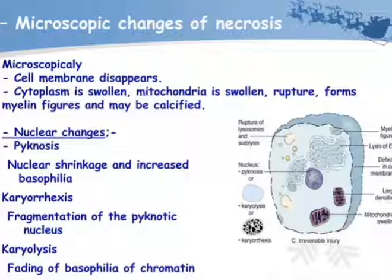Microscopic changes of necrosis: the cell membrane disappears, cytoplasm is swollen, mitochondria are swollen, rupture forms myelin figures and may be calcified. Nuclear changes include: pyknosis — nucleus shrinkage and increased basophilia; karyorrhexis — fragmentation of the pyknotic nucleus; and karyolysis — fading of the basophilia of the chromatin.